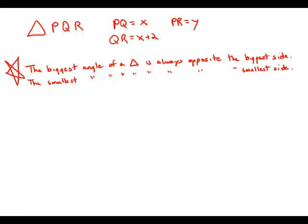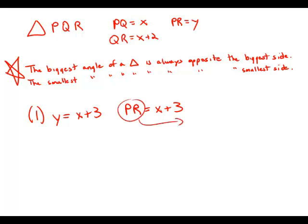Statement one tells us that y equals x plus 3. If y equals x plus 3, that means PR equals x plus 3. Well, x plus 3 is clearly bigger than x or x plus 2, so PR would be the biggest side. If PR is the biggest side, that means angle Q — the angle opposite PR — is the biggest angle. So statement one is perfectly sufficient.